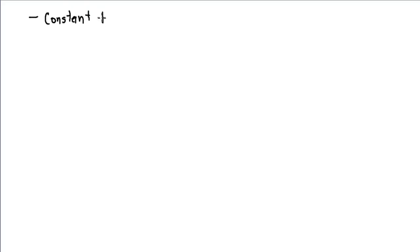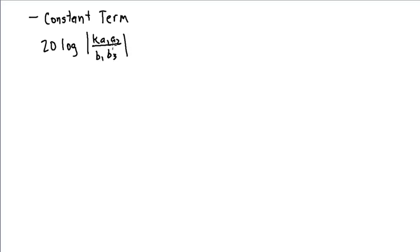Let's take a look at actually graphing the various terms that appeared in our dB magnitude response. The simplest term we had was 20 log of a product and ratio of constants. This term is not a function of omega, so I can evaluate it on my calculator fairly easily. Since it's not a function of omega, it's just going to be a constant over all values of omega.